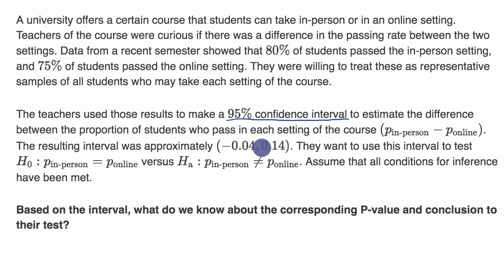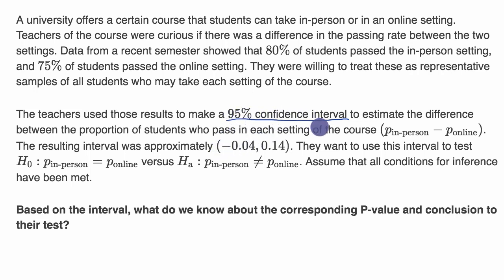To make sure we understand what this is saying: this is a 95% confidence interval, meaning 95% of the time you take these samples and construct a confidence interval for the difference in proportions, that interval will actually contain the true difference in proportions.